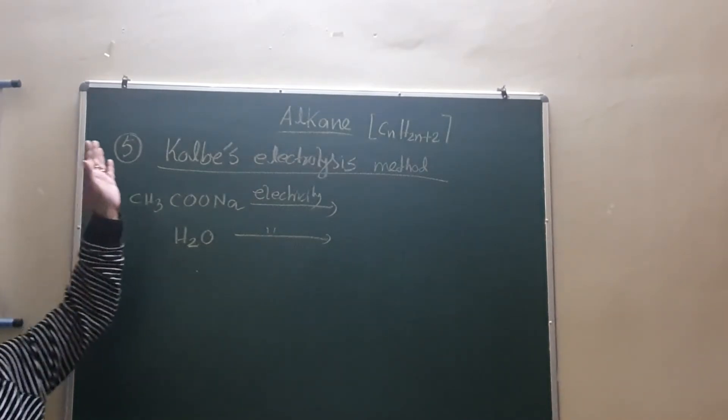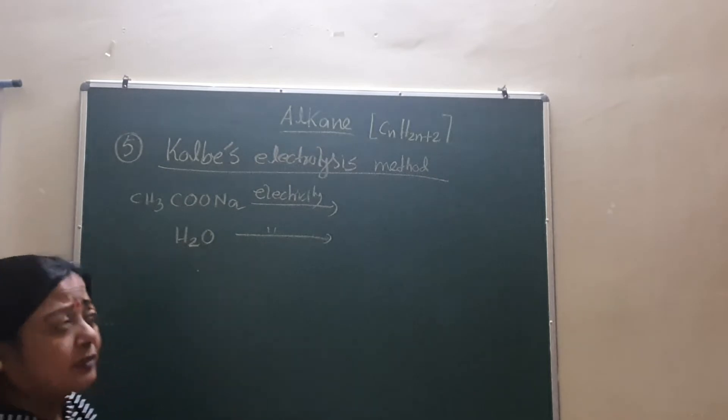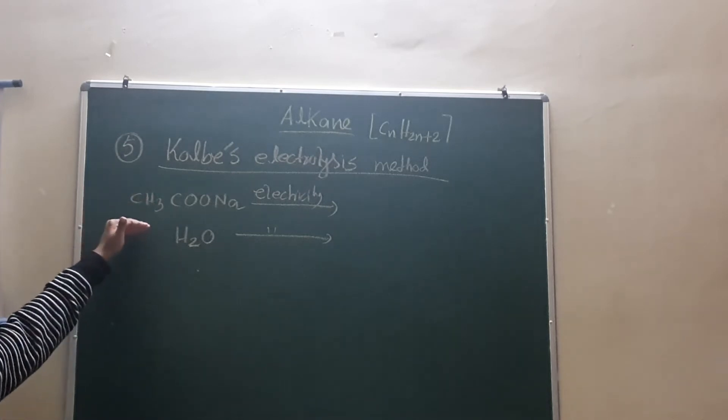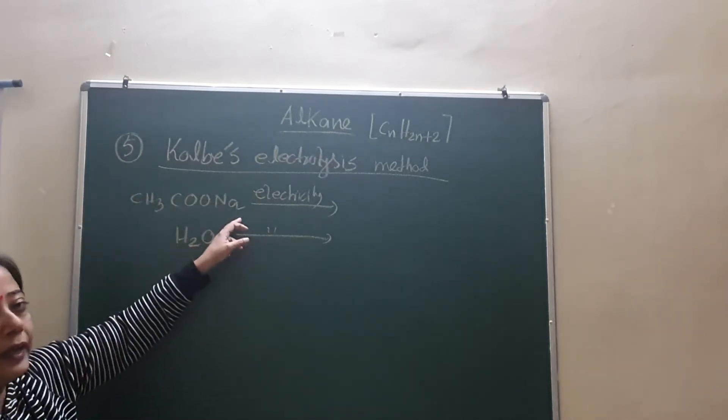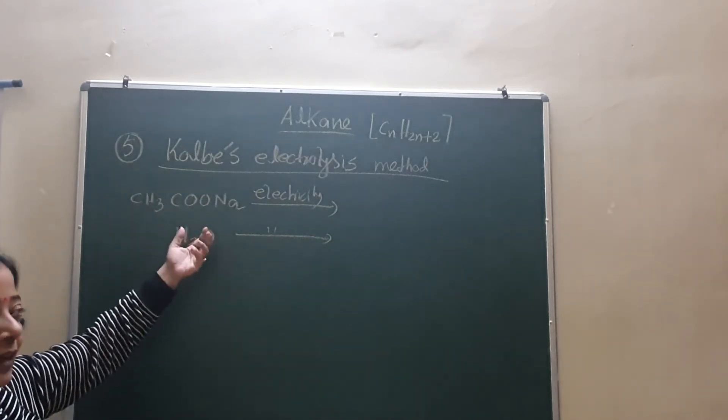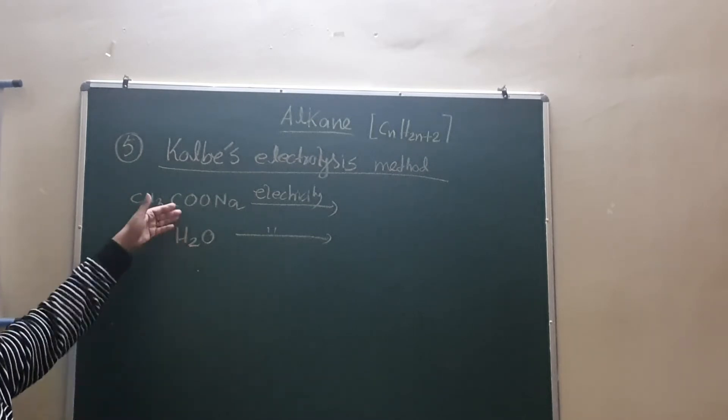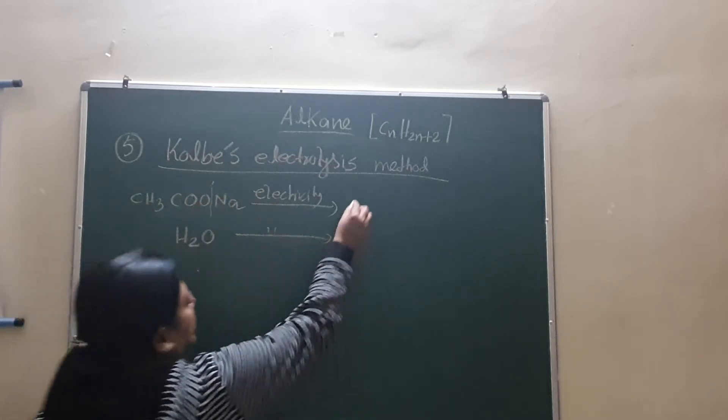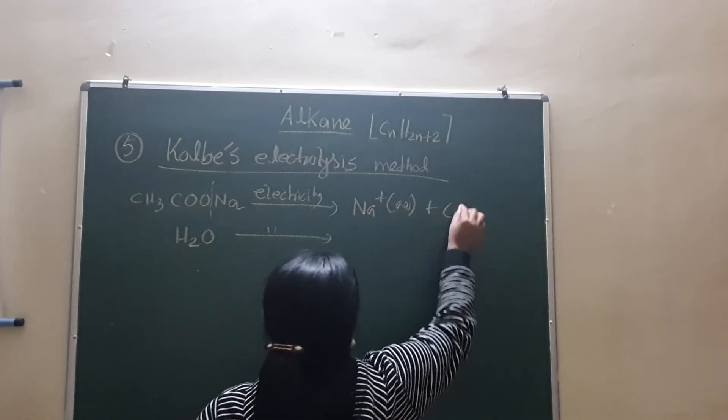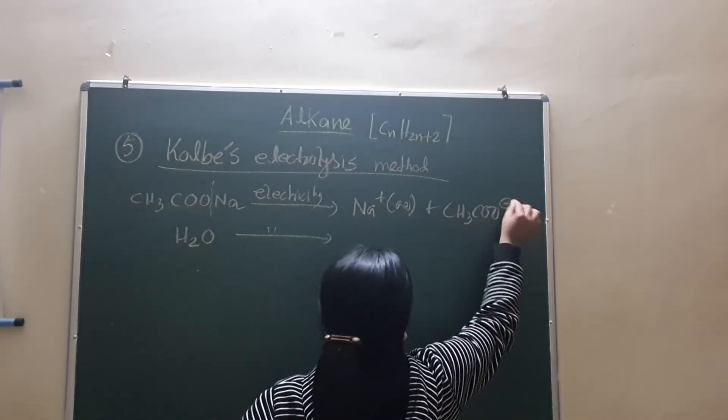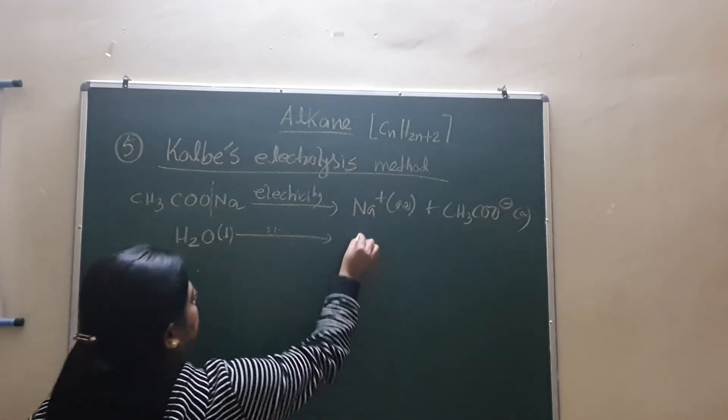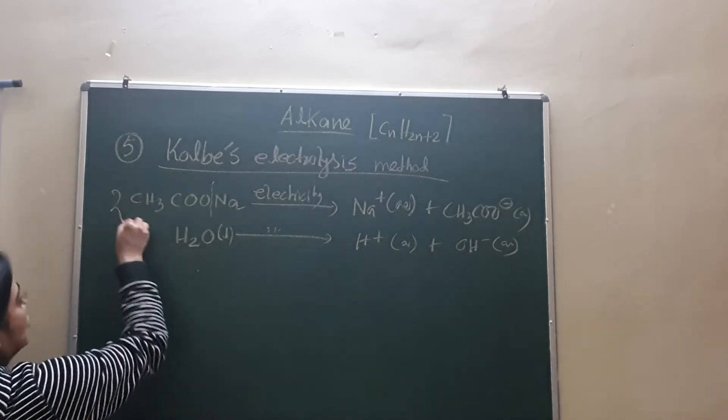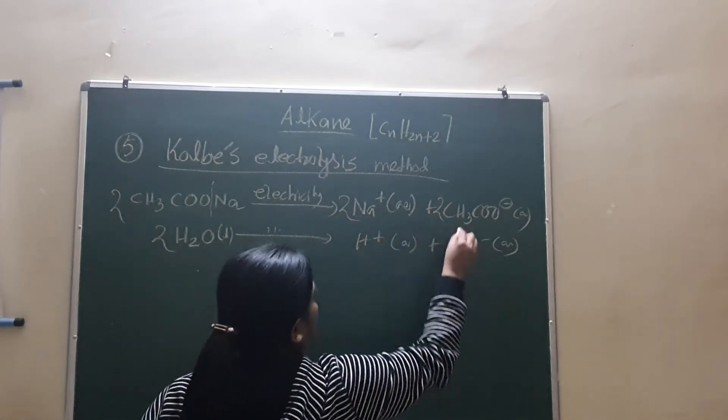Now we come to the last point: that is the Kolbe's electrolysis method. Very very important, carefully listen. We have taken electrolyte sodium acetate in aqueous solution. This is CH3COONa. You can say this sodium acetate or sodium ethanoate. And being electrolyte, we have to take salt in aqueous solution. First you pass electricity. Then what will be happening? It will breakdown: you get Na plus aqua and CH3COO minus aqua. And whenever water is present and electricity passes, you get H plus aqua and OH minus aqua. And if you take this as 2 molecules, all the things you will get 2 times like this.